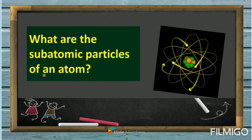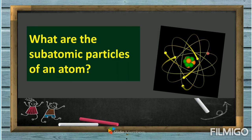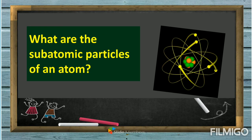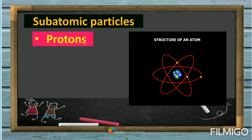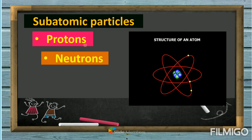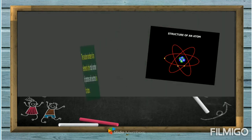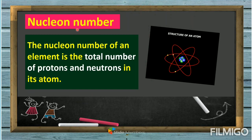As a review: the subatomic particles of an atom are protons, neutrons, and electrons. In the structure of an atom, the electrons roam around the valence shells on the outside, while the nucleus is inside the atom. Inside the nucleus are the protons and neutrons, and the particles moving around the electron shells are called electrons.